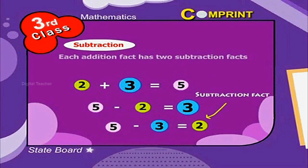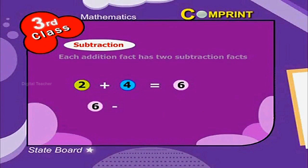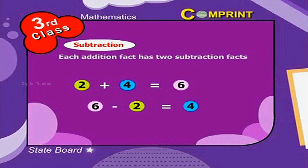Let us see few more examples. 2 plus 4 is equal to 6. This has 2 facts like 6 minus 2 is equal to 4, and 6 minus 4 is equal to 2.